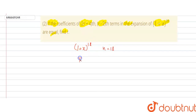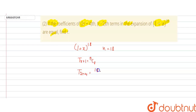We know that the R-th term of the expansion is given by NCR. We are given that the (2R+4)-th term and the (R-2)-th term of the expansion are equal. So we'll first find the (2R+4)-th term. T(2R+4) can be written as 18C(2R+4-1), which will be 18C(2R+3). As the R-th term is NCR, the (2R+4)-th term becomes 18C(2R+3).